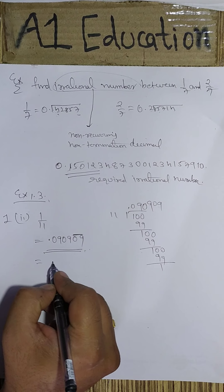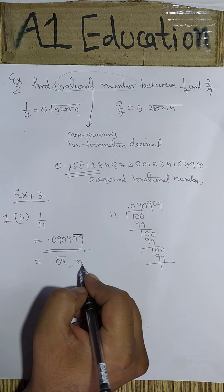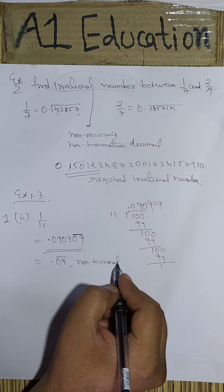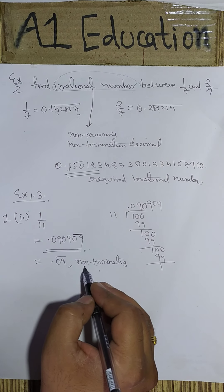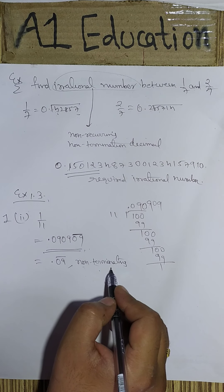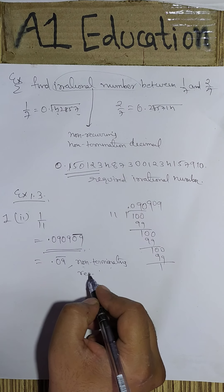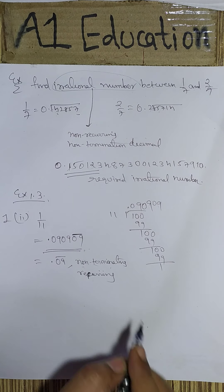So decimal format of this number is 0.090909 repeating, which can also be written as 0.09 bar. It is non-terminating, meaning it will keep on moving, and it is repeating or recurring. The same numbers are repeated again and again, so this is non-terminating recurring decimal.